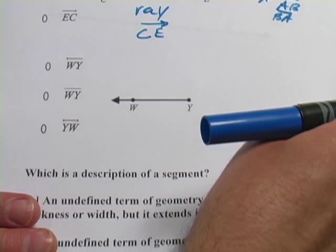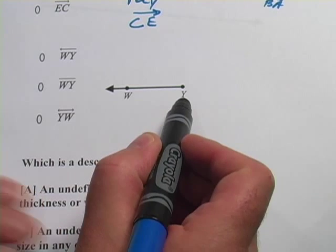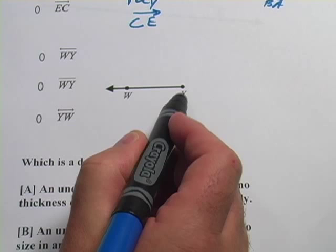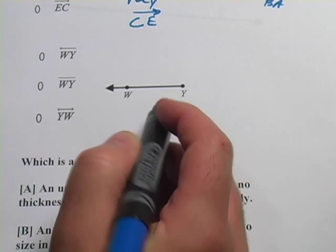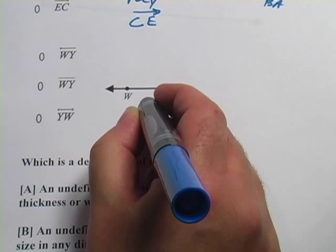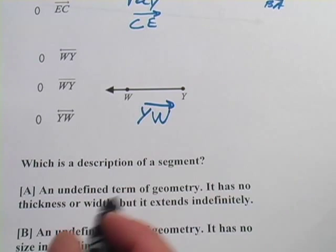Let's look at the next one. This one is also a ray. The arrow is over here though, pointing in the other direction. So the point that it starts, the endpoint here is Y. So that's what comes first, then the W and the arrow pointing off like that.